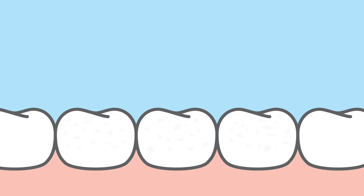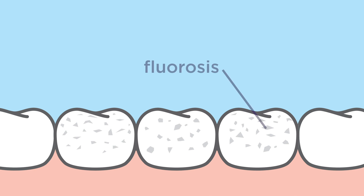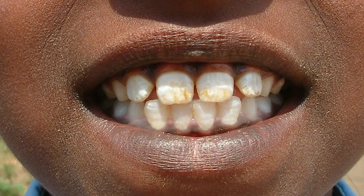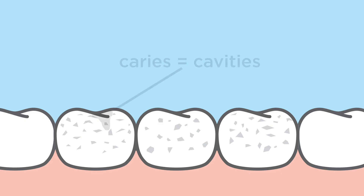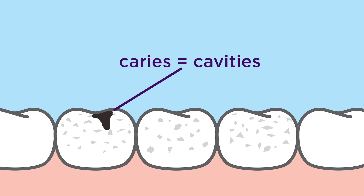Dental fluorosis is a developmental defect that affects tooth enamel, and it's caused by the excessive ingestion of fluoride during childhood. It results in pitting, poor mineralization, and increased porosity, all of which increases the risk of caries and tooth decay.